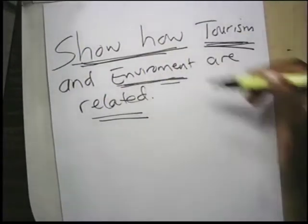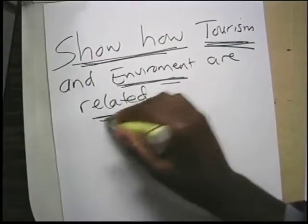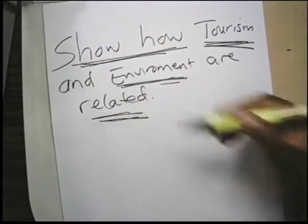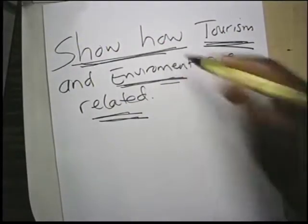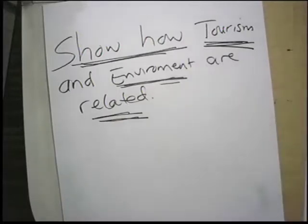'Environment' — that's your keyword. 'Related.' So as you are writing, you need to ask yourself: am I showing how tourism and environment are related? And it's always good to have a plan of your answer. This is an attack, so you should have a plan — how are you going to introduce yourself, how are you going to present your main points, how are you going to have your conclusion?